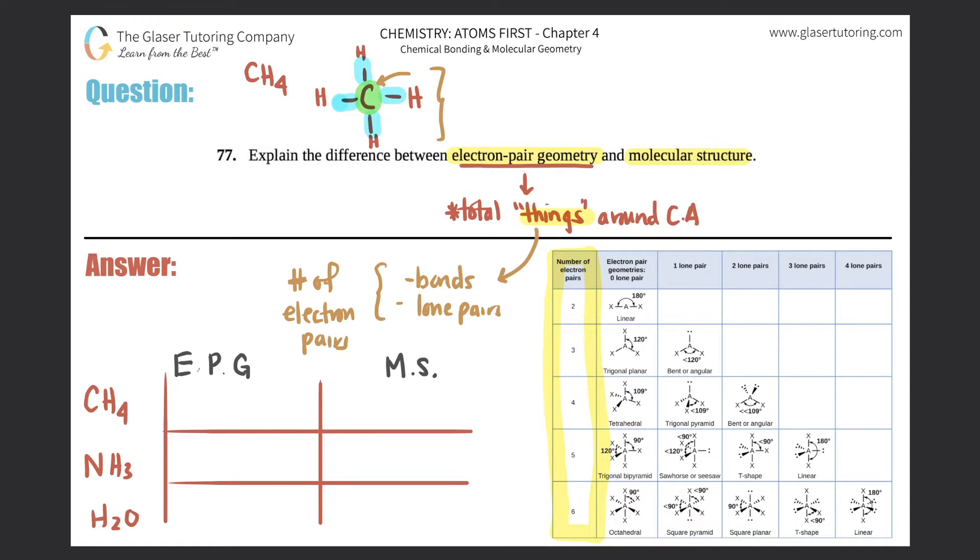So methane or CH4 has four things, and in this case the things represent the total number of electron pairs. Its electron pair geometry would take into consideration all of those, so that would always be the first column right next to the number of things or electron pairs. In this case, your electron pair geometry would be tetrahedral.